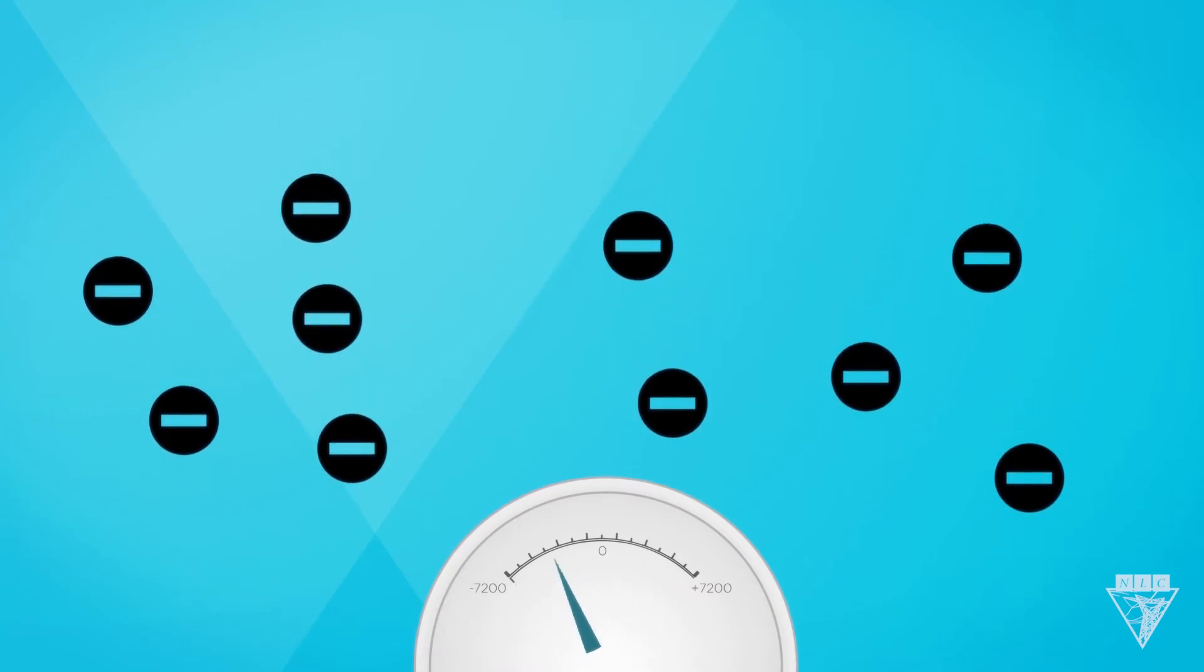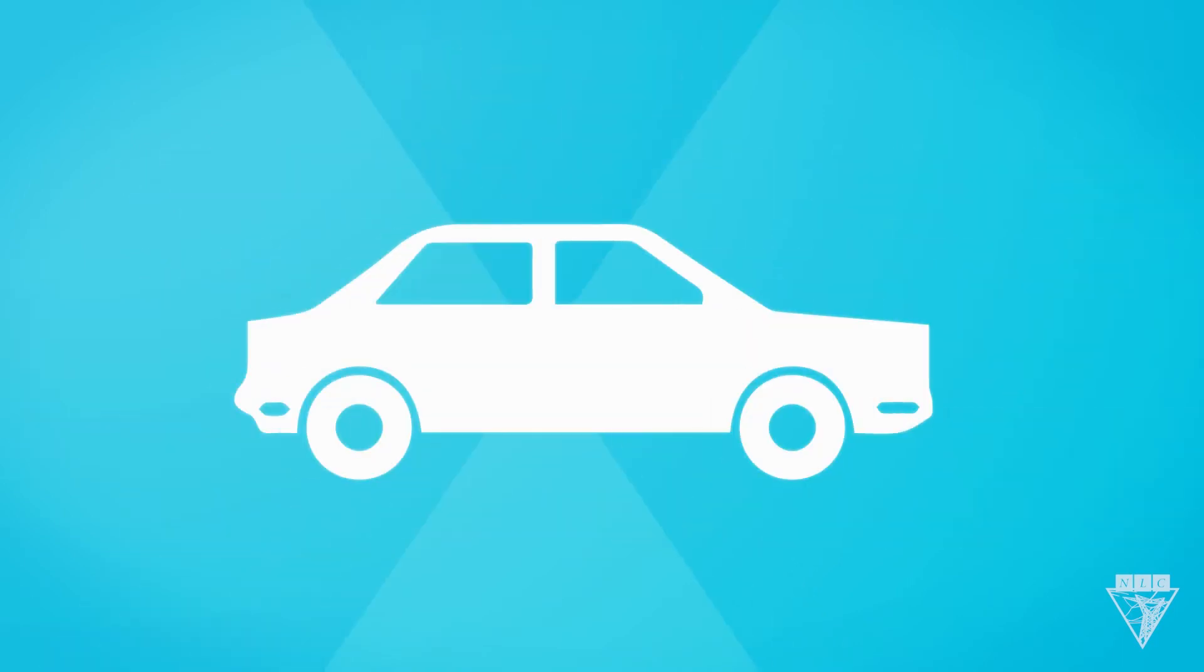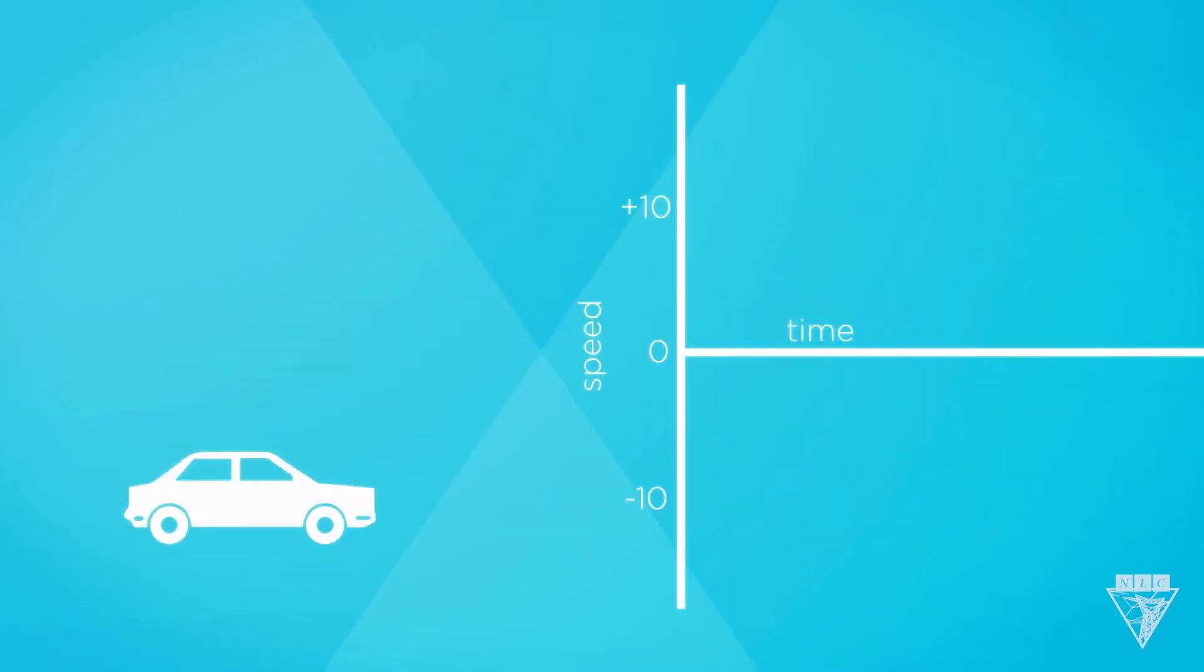But you're probably still wondering, what does the flow of electricity look like? Let's look at the car again, but this time we'll include a graph that shows the car's speed over a period of time. The car speeds up to 10 miles per hour and slows down. And then, like last time, it shifts to reverse and goes negative 10 miles per hour and then slows down.